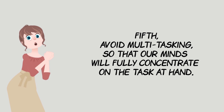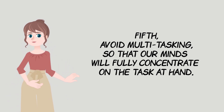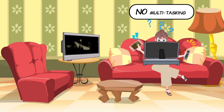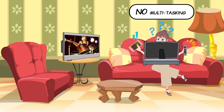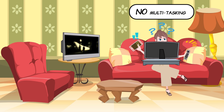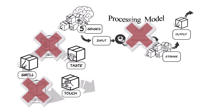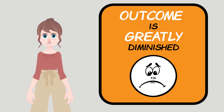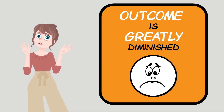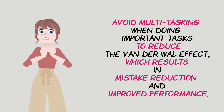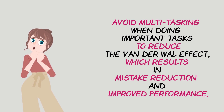Fifth, avoid multitasking so that our minds will fully concentrate on the task at hand. For example, typing a school report on our computer while friends are texting us on a smartphone sitting next to us and while watching television is dividing our visual input, auditory input, processing, and storage. Therefore, our output result will be greatly diminished. This increases the Vanderwall Effect, which means it increases mistakes. Avoid multitasking when doing important tasks to reduce the Vanderwall Effect, resulting in mistake reduction and improved performance.